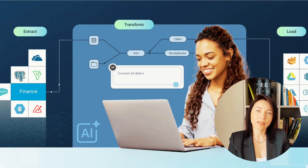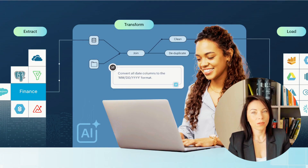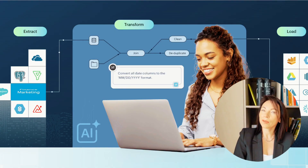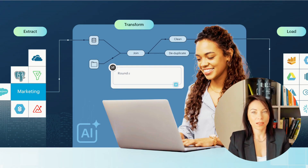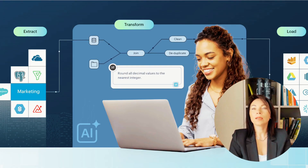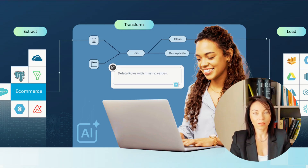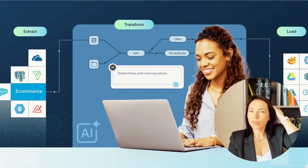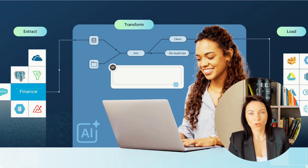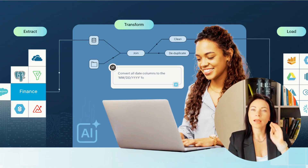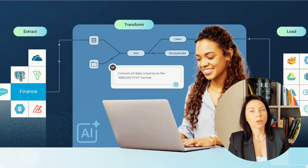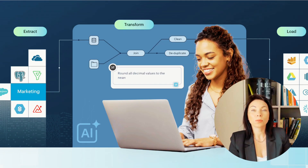Before we jump into the specifics, let's understand what Zoho Dataprep is. Zoho Dataprep is a no-code, AI-powered ETL tool designed to simplify data preparation. It helps businesses manage data from various sources, transforming it into structured formats ready for analysis. With Zoho Dataprep, you can automate processes using natural language prompts, thanks to its AI assistant, Ask Zia. This tool not only enhances data quality by detecting anomalies and duplicates, but it also includes over 100 pre-built connectors, like HubSpot CRM and Google Ads. Plus, it ensures compliance with regulations like GDPR.